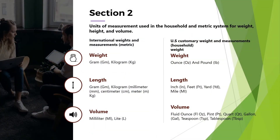Section 2: Units of Measurement Used in the Household and Metric System for Weight, Height, and Volume. International Weights and Measurements — Metric. Weight: Gram and Kilogram.